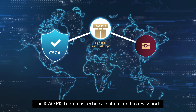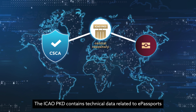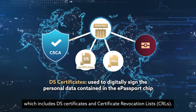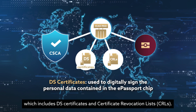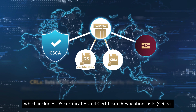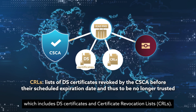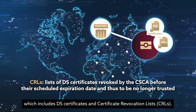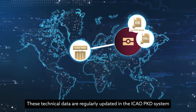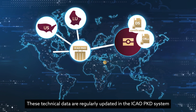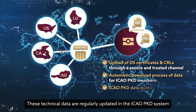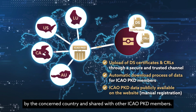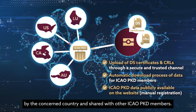The ICAO PKD contains technical data related to e-passports, which includes DS certificates and Certificate Revocation Lists. These technical data are regularly updated in the ICAO PKD system by the concerned country and shared with other ICAO PKD members.